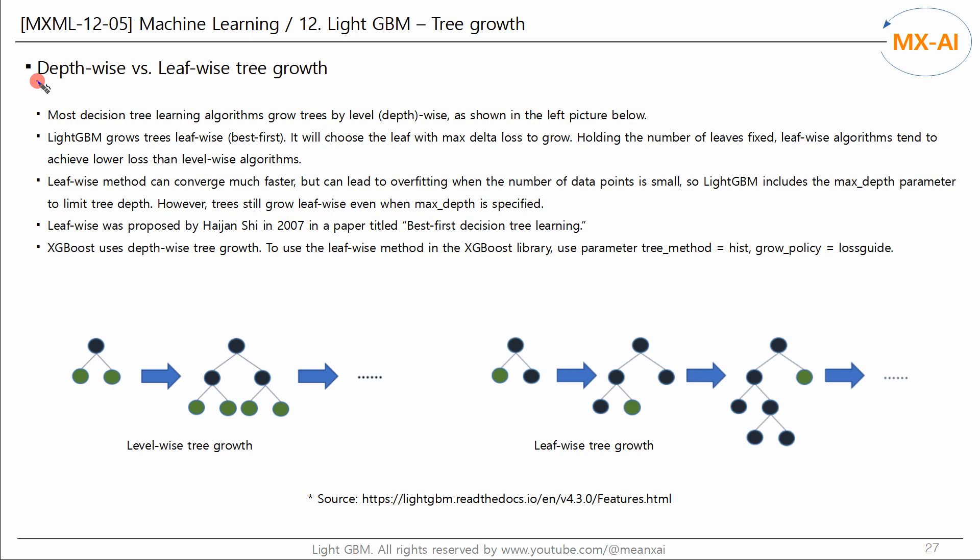This time, we will look at the depth-wise and the leaf-wise tree growth methods. Most decision tree learning algorithms grow trees by level or depth-wise, as shown in the left picture below. Light GBM grows trees leaf-wise or best-first, as shown in the right picture below.